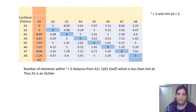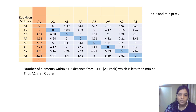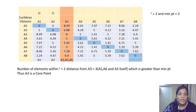Starting with point A1: within the epsilon distance of A1, there is only one point — A1 itself — which is less than the minimum points of 2. Hence A1 is an outlier, because no other point is in its neighborhood. Similarly, A2 within its epsilon neighborhood distance has only A2 itself and is also termed as an outlier.